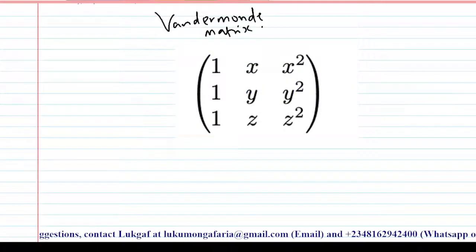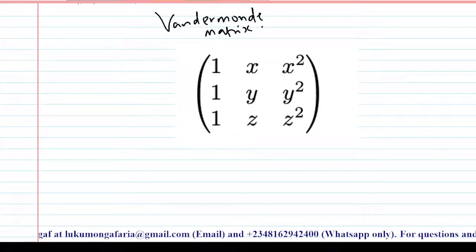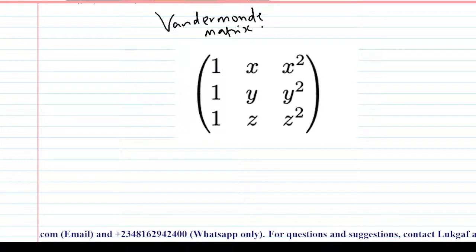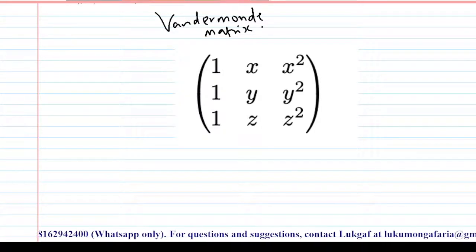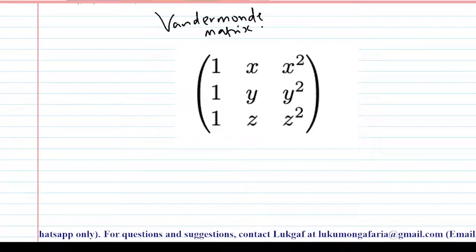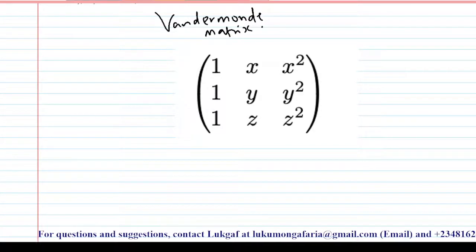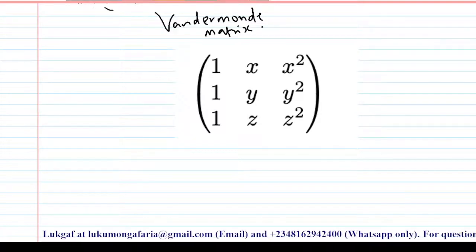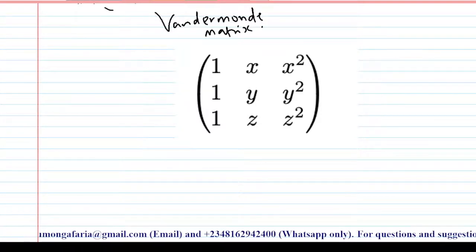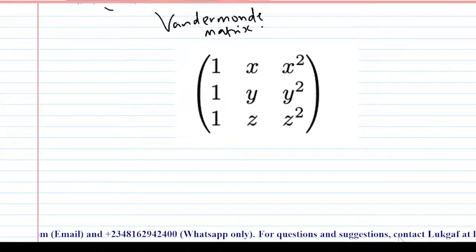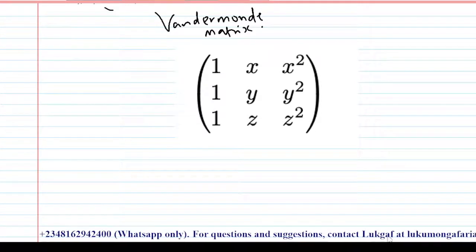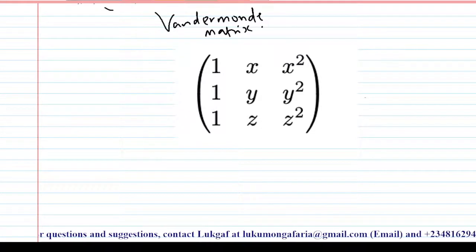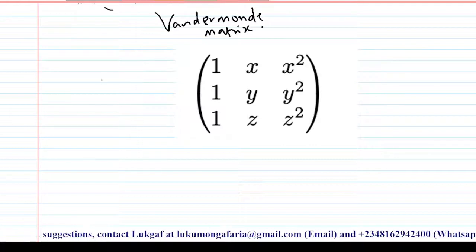The type of matrix you are looking at on my screen currently is an example of a Vandermonde matrix. A Vandermonde matrix is a kind of matrix with the terms of a geometric progression in each row. A geometric progression is a kind of sequence where successive terms have a constant ratio, which is also called a common ratio.